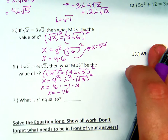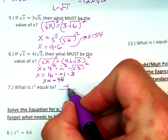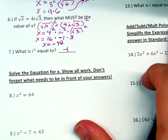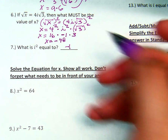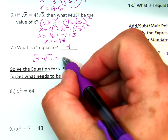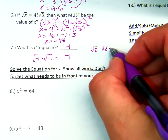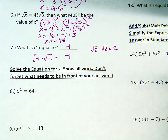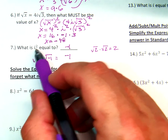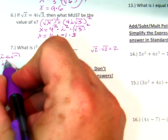Alright, number 7. What's i squared equal to? Negative 1. i squared, remember, is square root of negative 1 times the square root of negative 1, which means it would be negative 1 — just like saying the square root of 2 times the square root of 2 is equal to 2; you're not going to say it equals 4. We know i is equal to the square root of negative 1, and i squared is equal to negative 1. Those are two laws you need to know.